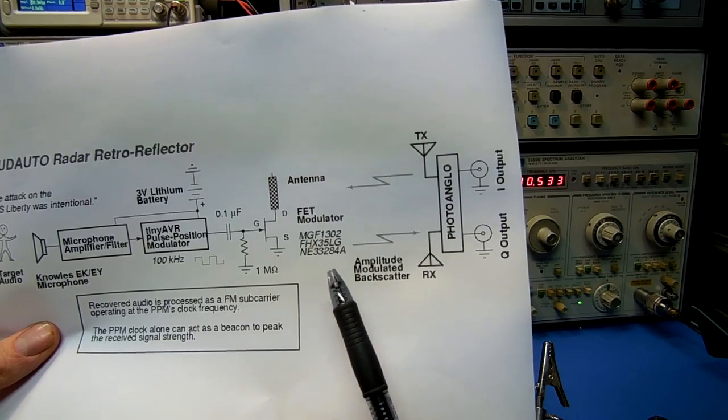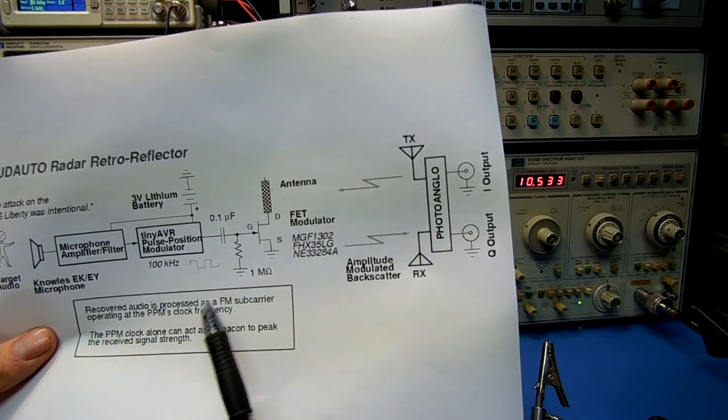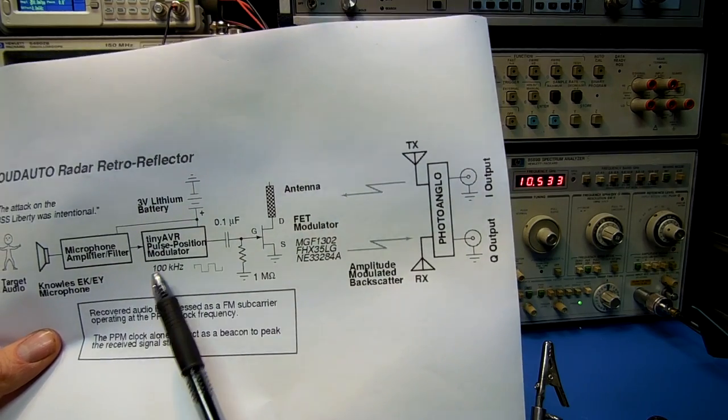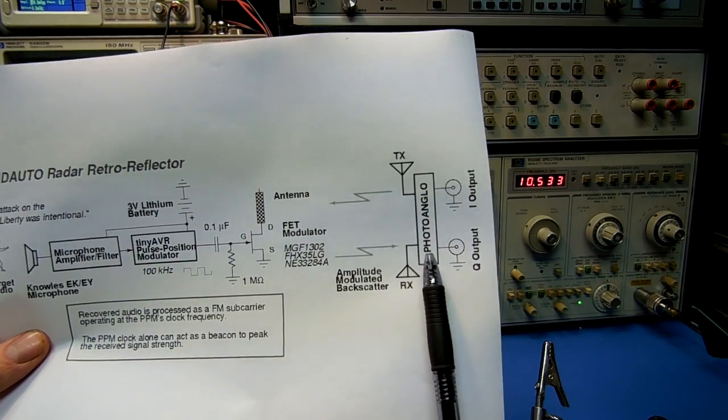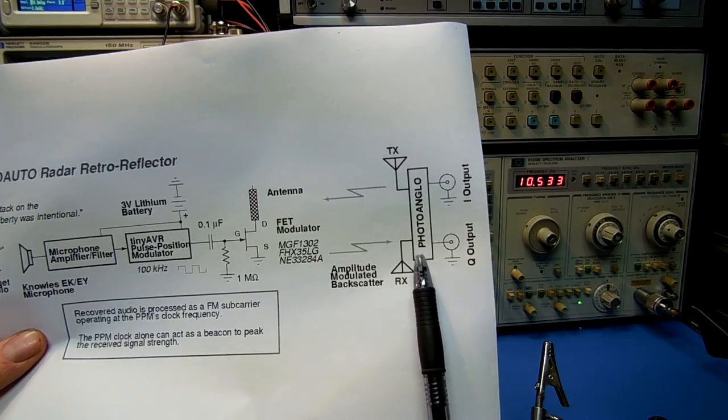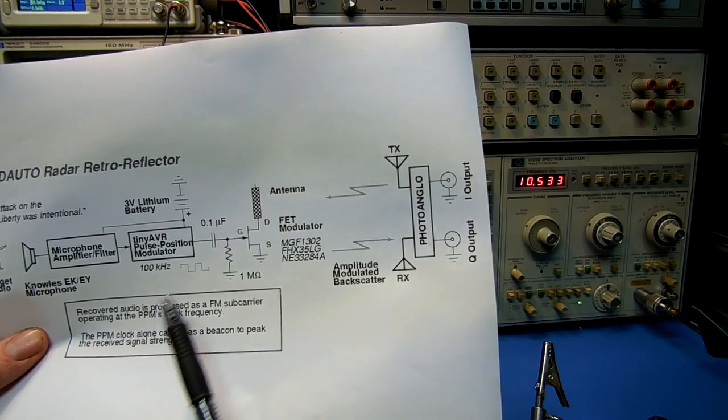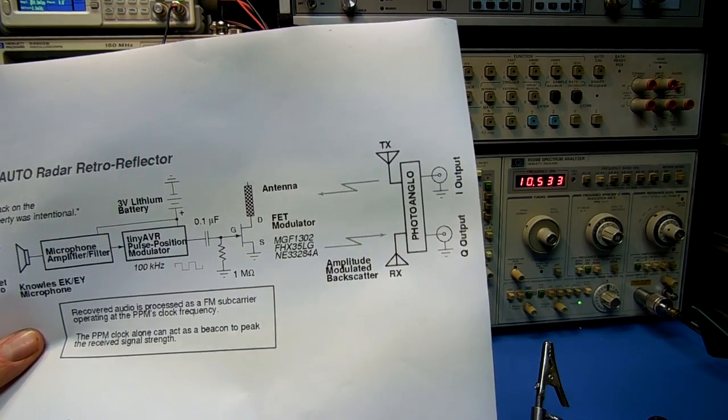When you put the pulses back together, it forms an FM subcarrier equal to the clock frequency of the pulse position modulator. For example, if the radar unit was at 1 GHz and the pulse position modulator was at 100 kHz, we have a 100 kHz subcarrier on that 1 GHz illumination frequency.